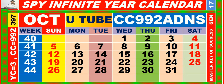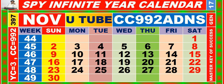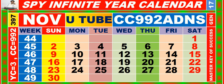Calendar for the month of October, having calendar code equal to 9-9-2. Calendar for the month of November, having calendar code equal to 9-9-2. Calendar for the month of December, having calendar code equal to 9-9-2.